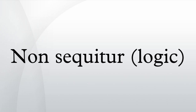Fallacy of the undistributed middle: The fallacy of the undistributed middle is a fallacy that is committed when the middle term in a categorical syllogism is not distributed. It is thus a syllogistic fallacy, and more specifically also a form of non sequitur.